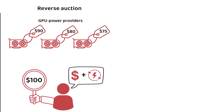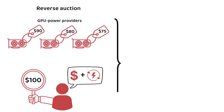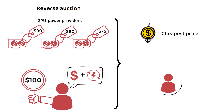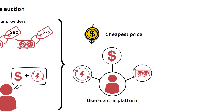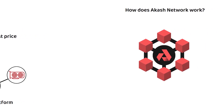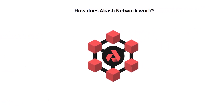Ultimately, this ensures the cheapest possible price for the user, which fits with Akash's key objective of being a developer and user-centric platform first and foremost. That leads us to the question: how does it all work?